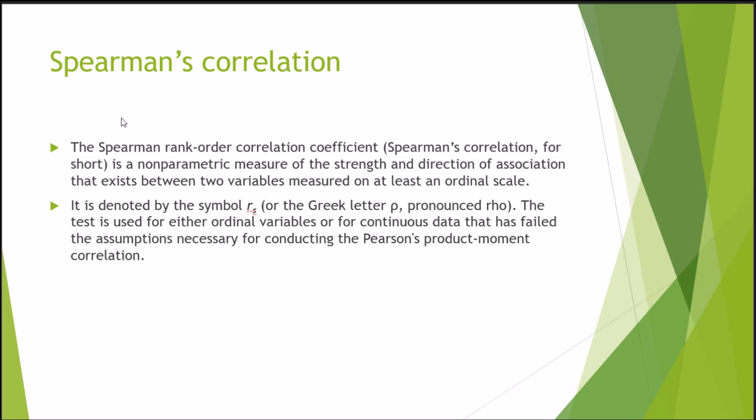Moving on to Spearman's correlation. The Spearman rank order correlation coefficient, simply known as Spearman's correlation, is a non-parametric measure of the strength of the direction and association that exists between two variables measured on at least an ordinal scale. If you've forgotten, the difference between a nominal and ordinal scale is that an ordinal scale has ranks. Kind of like a Likert scale, for instance. One being the least, and seven being the most. There's a difference between those two numbers, as opposed to just being in two different groups, such as male and female. The Spearman's correlation is noted by the symbol R sub-score S, or more generally, the Greek letter rho.